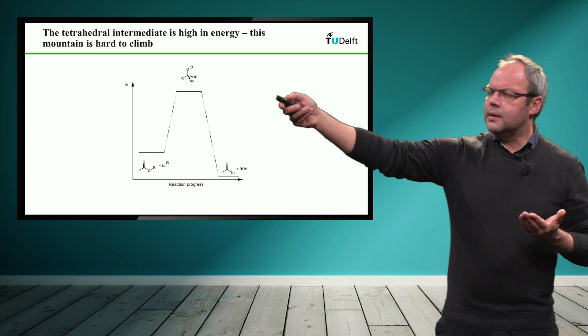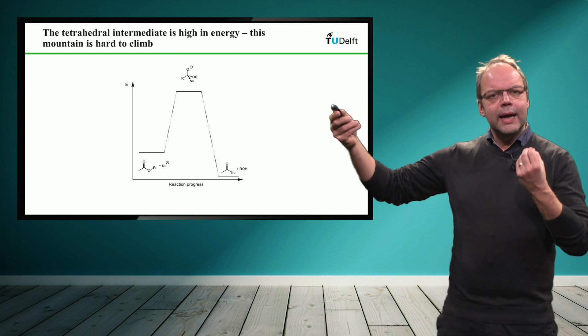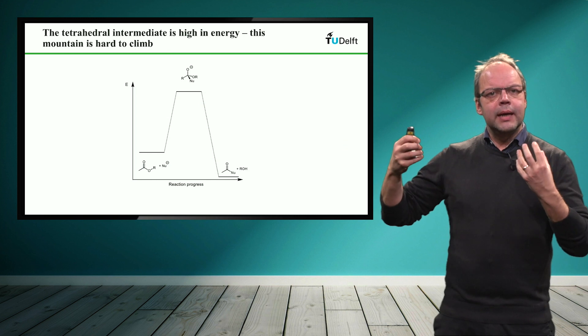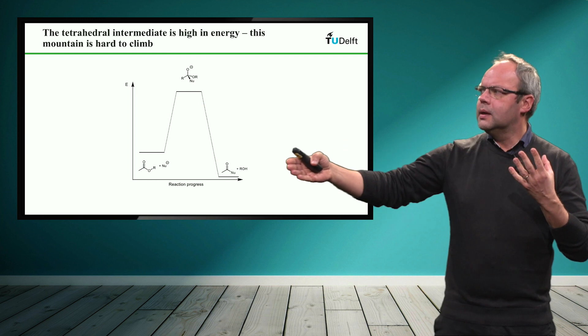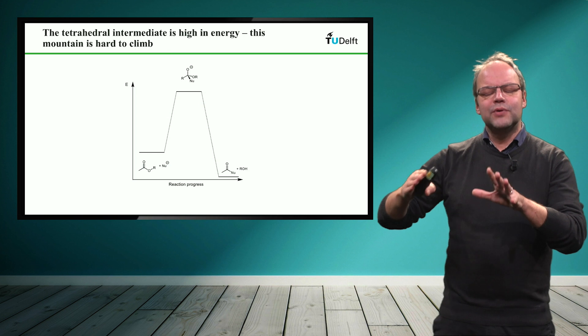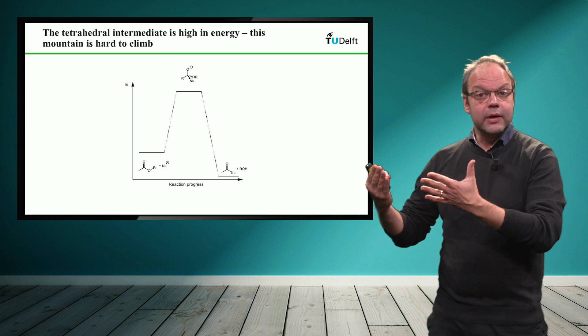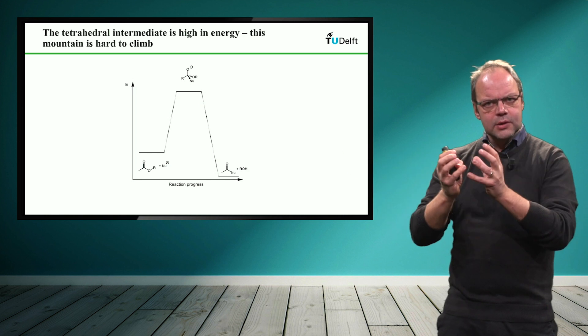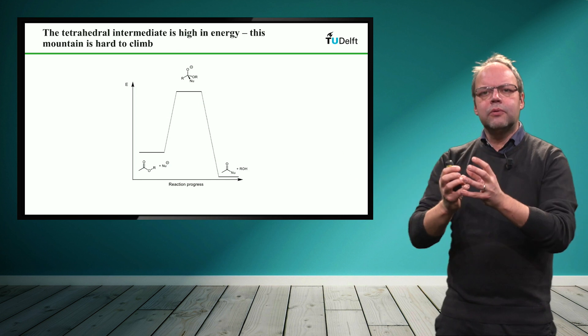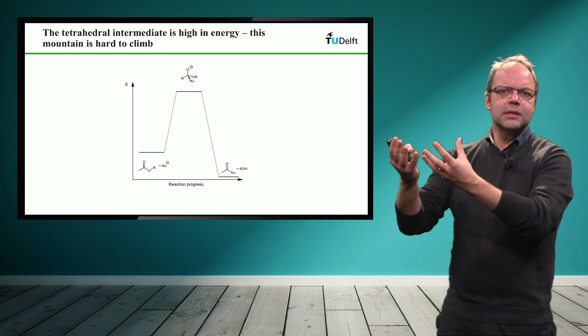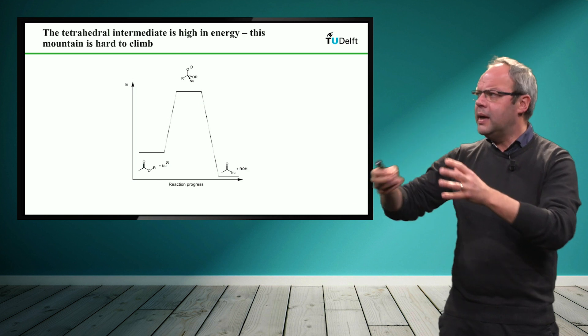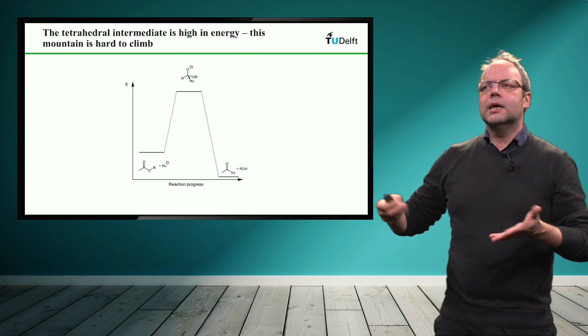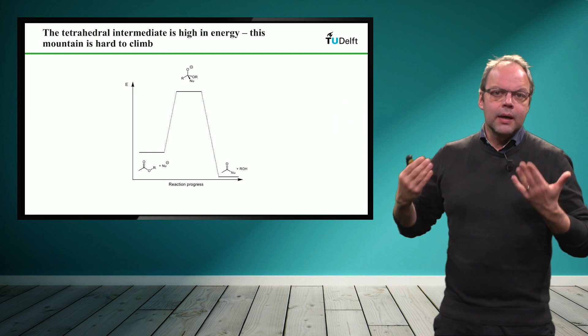And you see the transition state in this reaction, we have a negatively charged oxygen anion, and we have transformed the planar ground state into a tetrahedral intermediate. So the substituents also get closer to each other. So we have the steric repulsion, we have the localization of one negative charge. So that makes the intermediate very high in energy.